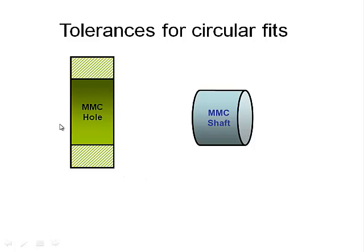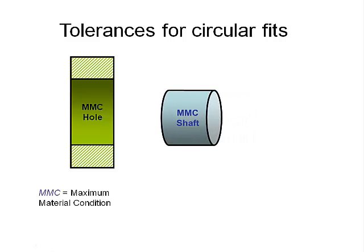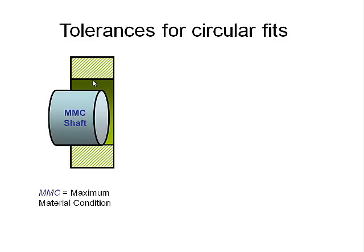On the left hand side we have a hole that is set to MMC — maximum material condition. This is basically the smallest hole that is allowable, where we have the most material left in the part. Over here we have an MMC shaft — maximum material condition shaft — so this is the biggest possible shaft that is allowable within our tolerances. If we put those together, we're left with a gap here, which is the amount of free play that this is going to allow, and so this defines the fit based on the size of the shaft and the hole.